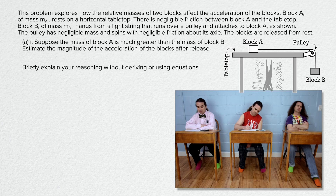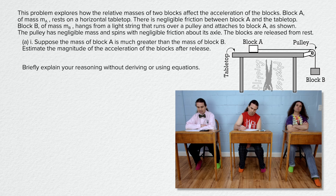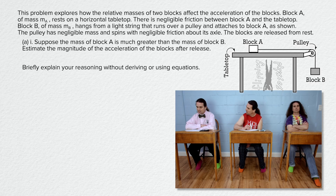This problem explores how the relative masses of two blocks affect the acceleration of the blocks. Block A of mass m sub a rests on a horizontal tabletop. There is negligible friction between block A and the tabletop. Block B of mass m sub b hangs from a light string that runs over a pulley and attaches to block A as shown. The pulley has negligible mass and spins with negligible friction about its axle. The blocks are released from rest. Part A-I: Suppose the mass of block A is much greater than the mass of block B. Estimate the magnitude of the acceleration of the blocks after release.